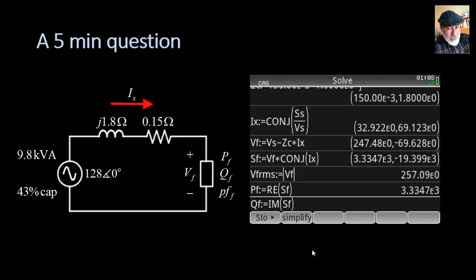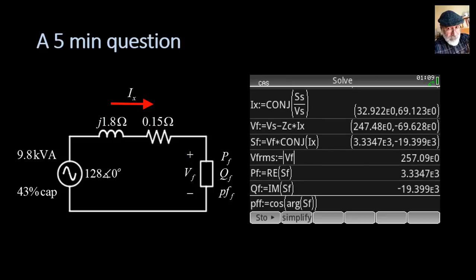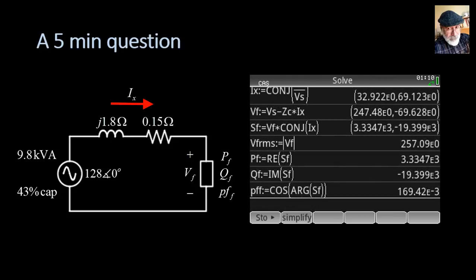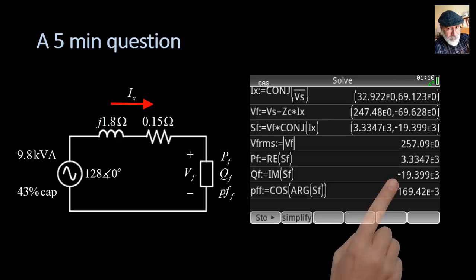What is the reactive power at the load? The imaginary part of the complex power Sf: negative 19.4 kilovolt-ampere reactives, or kilovars. And the power factor at the load? Cosine of the argument of Sf: that is 0.169.